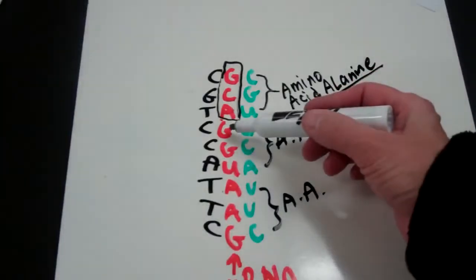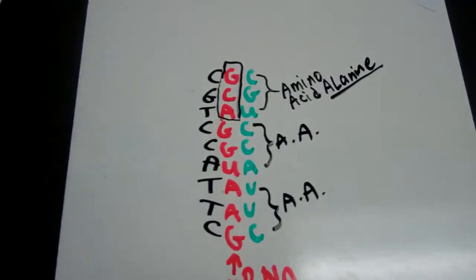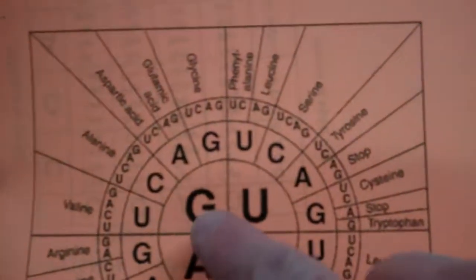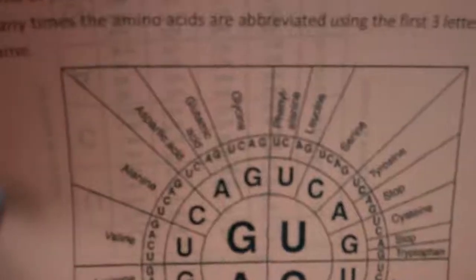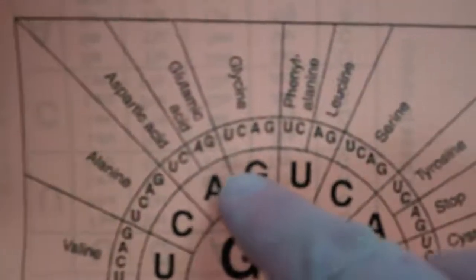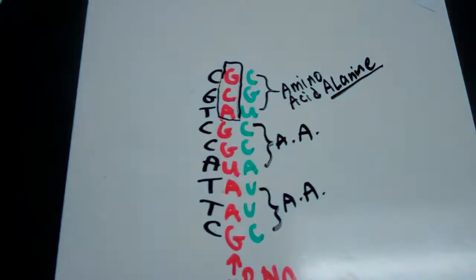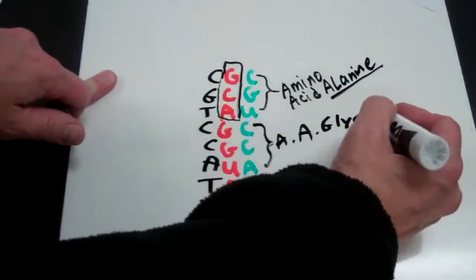And then I could look up the next one, G, G, U, on my codon chart. Let's do that together. G, G, U. I'll hold it a little closer here. So we start with G, and then we go to G, and then we go to U. I'm sorry, G, G, U. And that is going to code for glycine. So glycine would be the next amino acid, and so on.